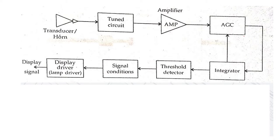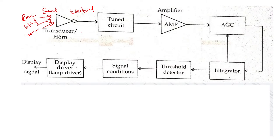Looking at the block diagram for the electronic control: whatever high frequency sound is received from vehicles in the rear blind zone is picked up by a transducer, also called a horn antenna. This sound is converted to electrical energy — similar to a microphone which converts sound into electrical energy. It is then taken by a tuned circuit at a particular frequency, amplified by an amplifier, and the gain is controlled and increased properly so that you respond only to those high frequency signals coming from fast-moving vehicles near your car.